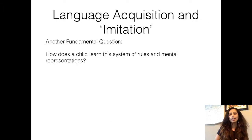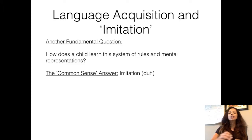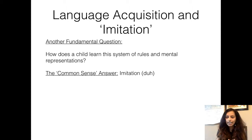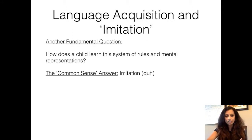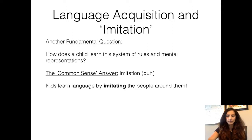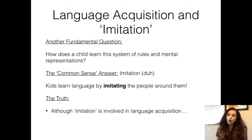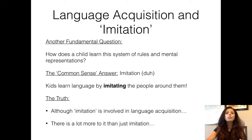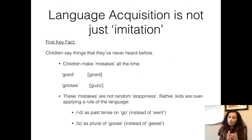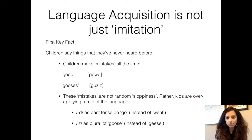When you talk about how children actually learn the system of rules and representations, one of the most common answers is imitation. Children imitate you all the time — they want to do things like you, they want to talk like you, they want to dress up like you. So imitation is a really good answer. But although there is some amount of imitation, that's not the entire picture. There's a lot more to language learning and language acquisition than imitation, and there are a couple of pieces of evidence that actually lend themselves to this fact.